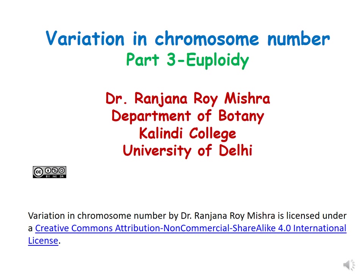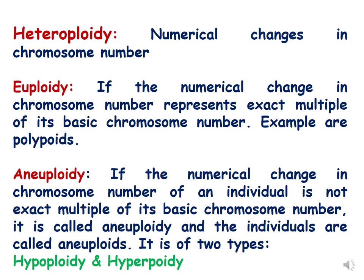Hello dear students, today's lecture is part 3 of variation in chromosome number and this lecture deals with euploidy. We have already discussed in the previous lecture that euploidy is when the numerical change in chromosome number represents an exact multiple of its basic chromosome number and it also involves polyploidy, while in aneuploidy the numerical change is not an exact multiple of the gametic number and it includes hypoploidy and hyperploidy.